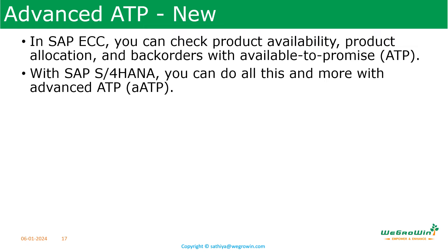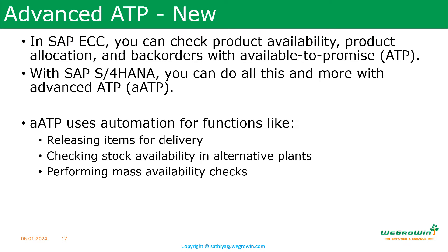The next interesting new feature in S4HANA is advanced ATP. In SAP ECC, you can check product availability, product allocation, and back orders with available-to-promise (ATP). With SAP S4HANA, you can do all these and more with advanced ATP. Advanced ATP uses automation for functions like releasing items for delivery, checking stock availability in alternative plants, and performing mass availability checks.